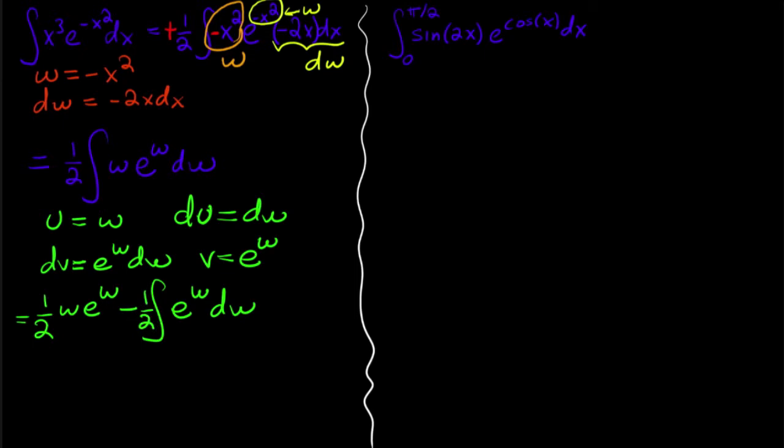And so applying integration by parts, I would get one half times uv. So w e to the w minus the integral of v du. So e to the w dw. And I need to bring the one half onto that one as well. So then this is equal to one half w e to the w. Let me go back to what w is. So one half negative x squared e to the negative x squared minus one half e to the negative x squared plus c.